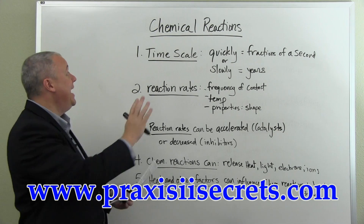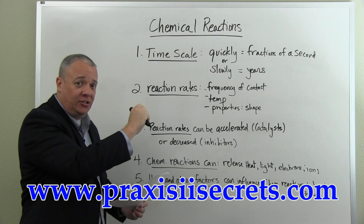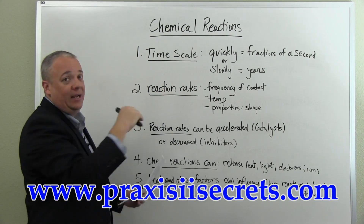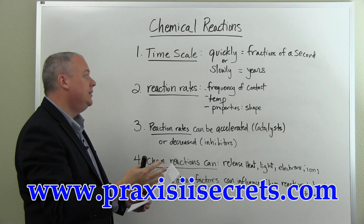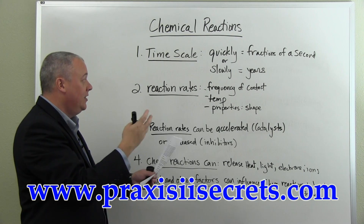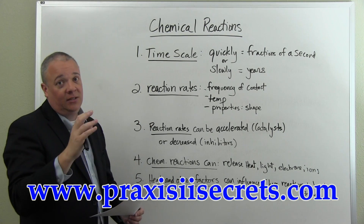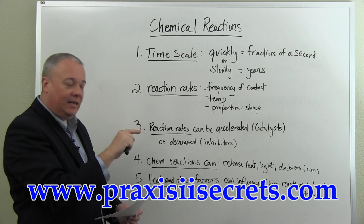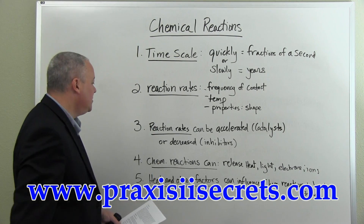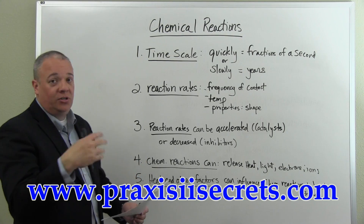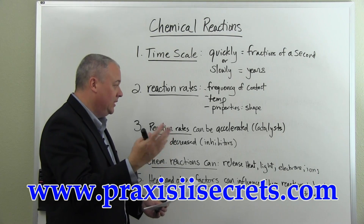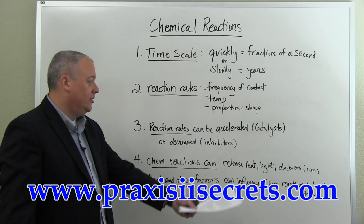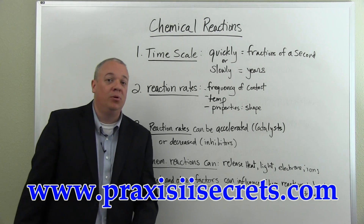Chemical reactions, just the basic overview again: time scale from fractions of a second to years and years. Reaction rates are affected by the frequency of contact, the temperature at the point of mixing and contact, and the properties — solid, liquid, gas, the shape. Reaction rates can be accelerated with catalysts, decreased with inhibitors. Chemical reactions produce things like heat, light, electrons spinning off, ions. And heat and other factors influence chemical reactions and help to break bonds.